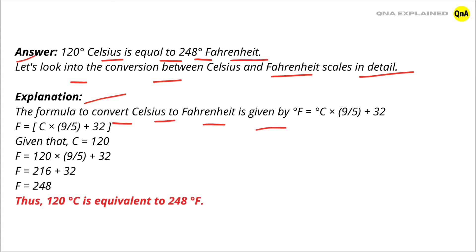F = C × (9/5) + 32. Given that C = 120, put the value of Celsius in this formula: F = 120 × (9/5) + 32, which is equal to 216 plus